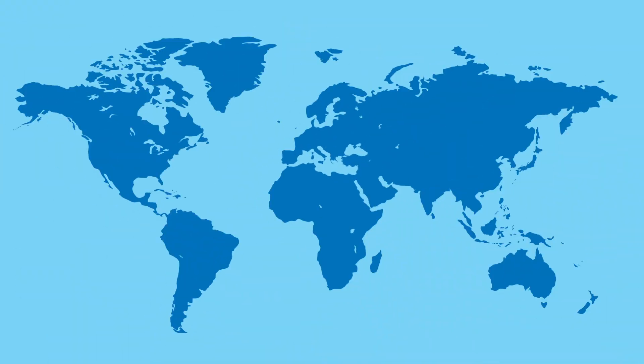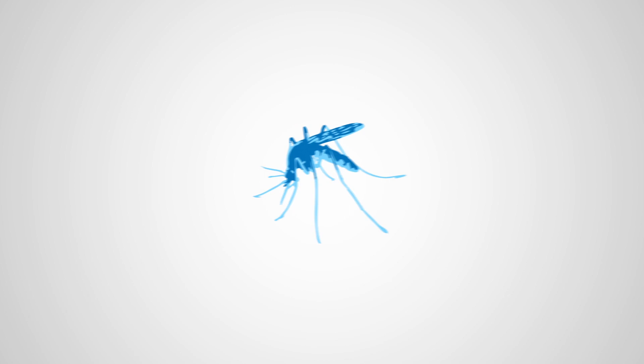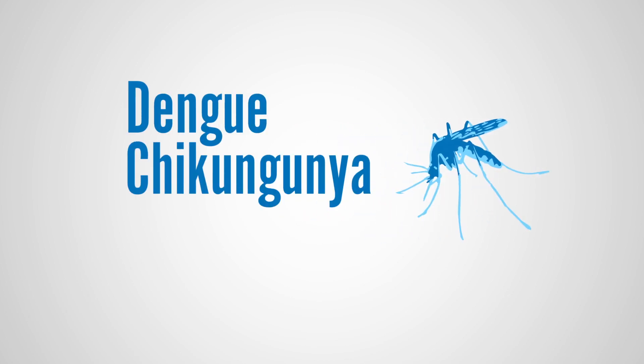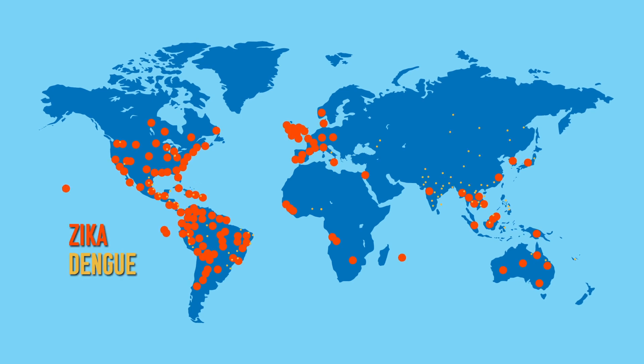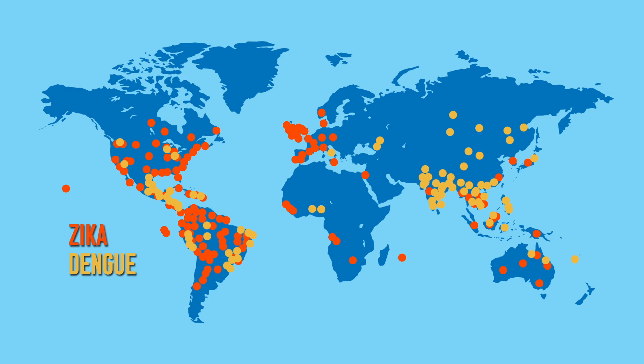Other data sources can be satellite data. For example, if we wanted to monitor the spread of a mosquito-borne disease — such as dengue, chikungunya, or Zika, which you've probably heard a lot about in the news recently — we can use satellite data to infer vegetation levels and how moist or wet a certain region is. This relates to how many mosquitoes are present, which then relates to the number of human cases of a mosquito-borne disease.